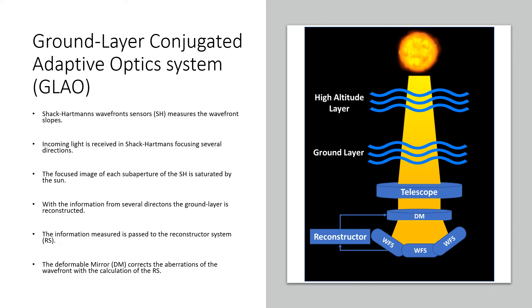This layer is characterized by presenting many differences between one direction and another, and having great variability over time. For that reason, this configuration needs a set of Shack-Hartmann sensors focused in several directions to reconstruct the ground layer. The light received from the sun is focused by an array of lenses into the different subapertures of the Shack-Hartmann, as in a commonly used adaptive optics system. The Shack-Hartmann calculates the slopes of the wavefront to pass them to the reconstructor to calculate the correction, which is then performed by the deformable mirror.